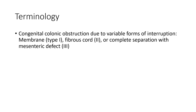Colonic atresia is a form of intestinal colonic obstruction due to variable forms of interruption: membrane Type 1, fibrous cord Type 2, or complete separation with mesenteric defects, Type 3.